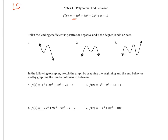We're going to look at two things. Is the LC positive or is it negative? If it is positive, then at the end the arrow is going up. And if it is negative, then at the end the arrow is going down.